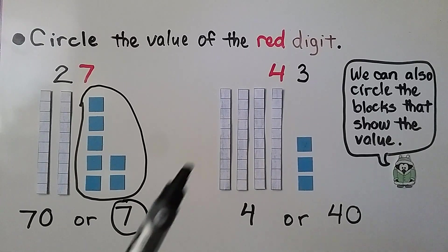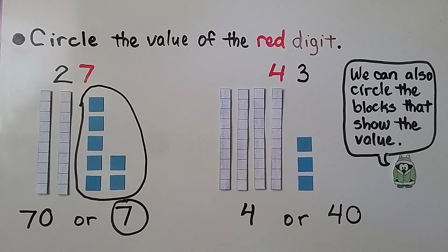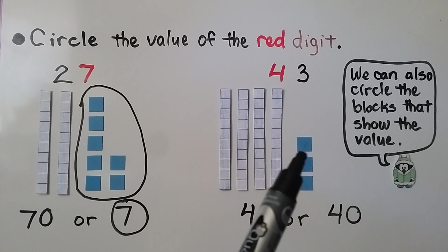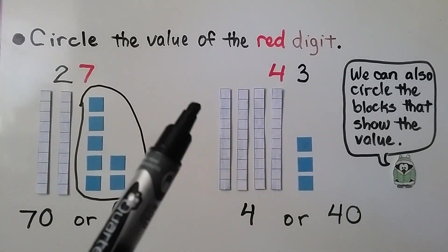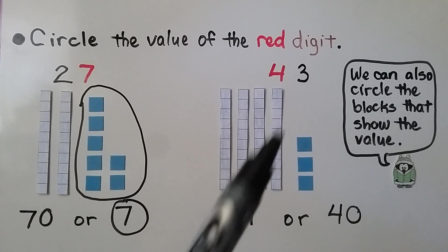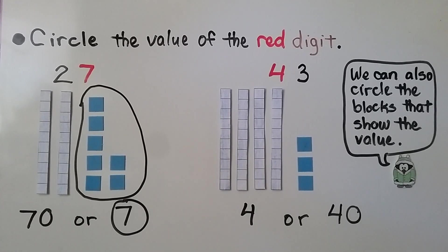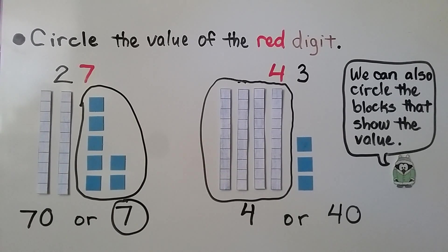What about this one? Now the 4 is red. We have 4 tens and 3 ones. This 4 is in the tens place — it represents 4 tens. That means the red 4 must represent 40.